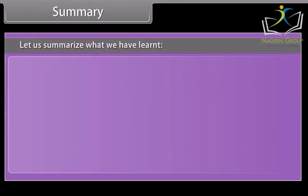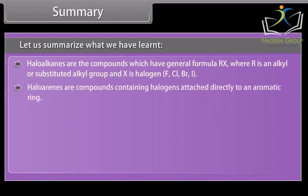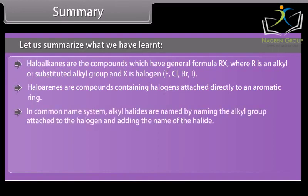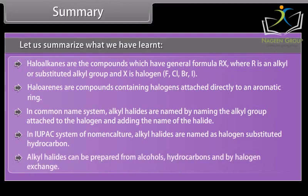Summary. Let us summarise what we have learnt. Haloalkanes are compounds with the general formula RX, where R is an alkyl or substituted alkyl group and X is halogen F, Cl, Br, or I. Haloarenes are compounds containing halogens attached directly to an aromatic ring. In the common name system, alkyl halides are named by naming the alkyl group attached to the halogen and adding the name of the halide. In the IUPAC system, alkyl halides are named as halogen-substituted hydrocarbons. Alkyl halides can be prepared from alcohols, hydrocarbons, and by halogen exchange.